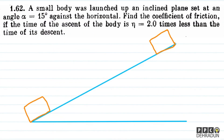So, I am going to explain this question. Basically, the angle alpha gives us this inclined plane, and we have to find the coefficient of friction.